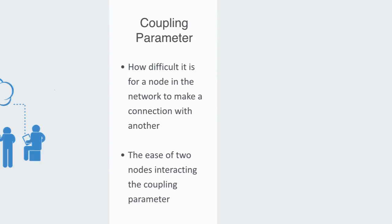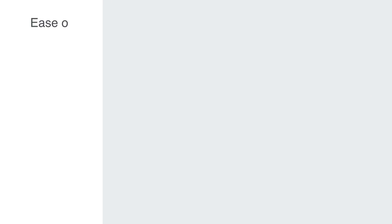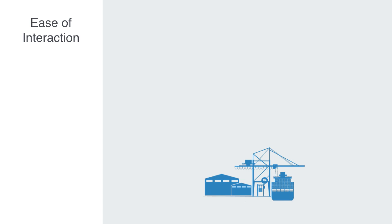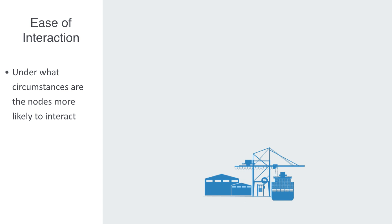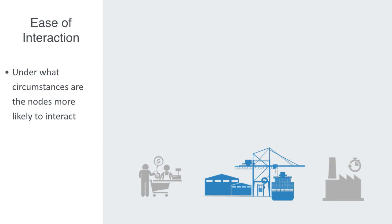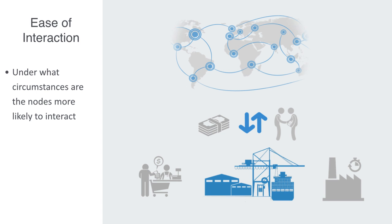So if we take a network — say a logistics network — we can ask under what circumstances are the nodes more likely to interact. In this case the nodes are producers, distributors, and consumers, and they will be more likely to interact as the cost of transportation and trade restrictions are reduced. The development of our global economy over the past few decades could be cited as an example here.